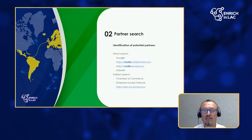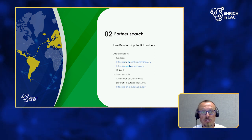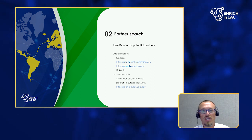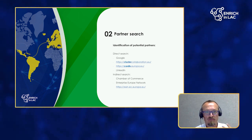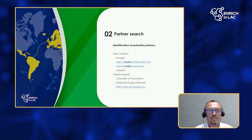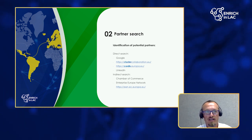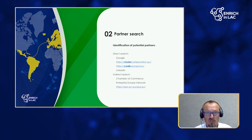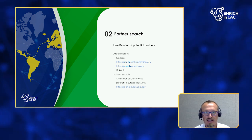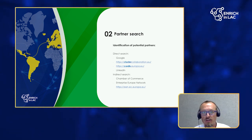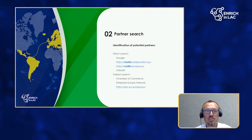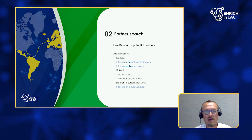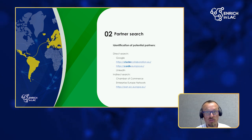Let's come to the next step: identifying potential collaboration partners. I distinguish between the direct search and the indirect search. For the direct search, of course the first address is Google, but Google provides information only on companies who are quite active in the digital space. Clusters are also a very good source for potential collaboration partners. There is a European Cluster Collaboration Platform — you can see the link on the slide. If you'd like to enter, for example, the French market in the field of sustainable energy, you will find clusters there. The clusters provide member platforms you can search, or you can get in contact with the cluster managers.